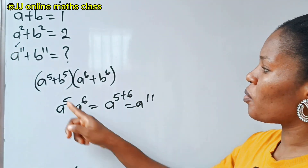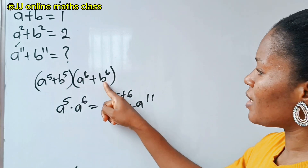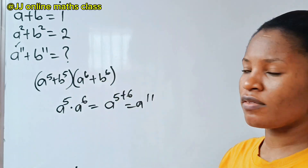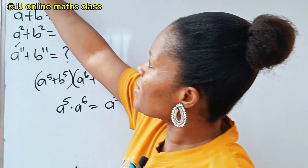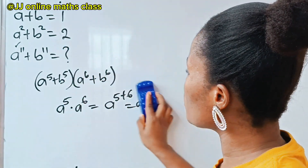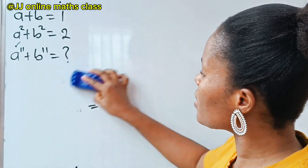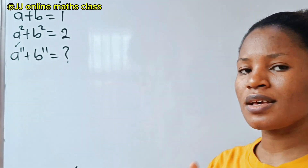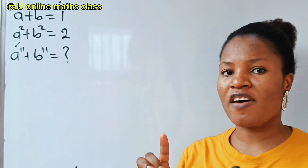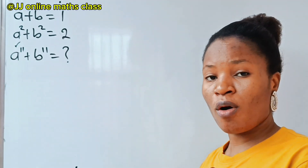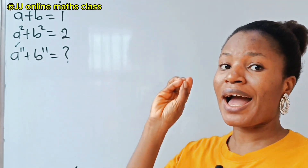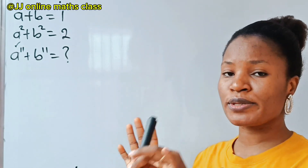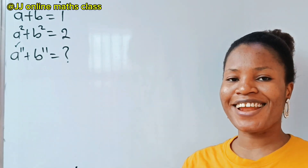Similarly, if you multiply b to the power of 5 by b to the power of 6, we get b to the power of 11. So everything we are going to do now, we are going to concentrate on how to get a to the power of 5 plus b to the power of 5, and a to the power of 6 plus b to the power of 6.